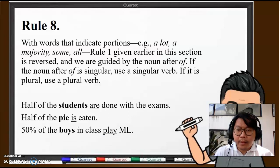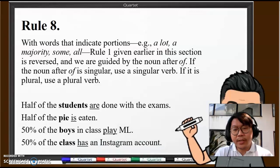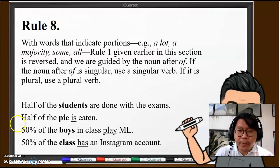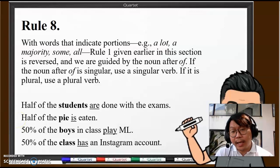Next: "Half of the pie is gone." Again, "half" is not the subject. The subject is "pie." Pie is singular, therefore the verb is "is." Next: "50 percent of the boys in class play ML." 50 percent is a percentage. "Boys" is the subject, boys being plural, the verb is "play." Next: "50 percent of class has an Instagram account." In this particular case, "class" is the subject, and because class is singular, "has" is our verb.